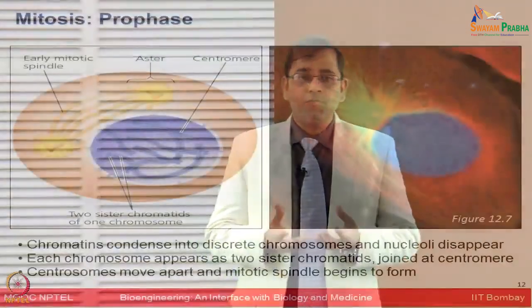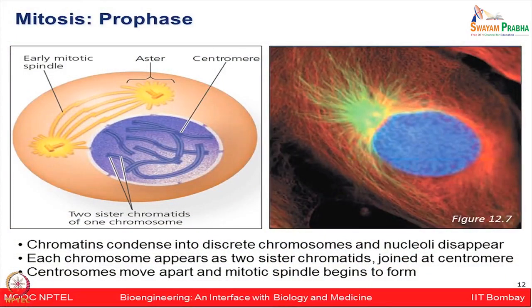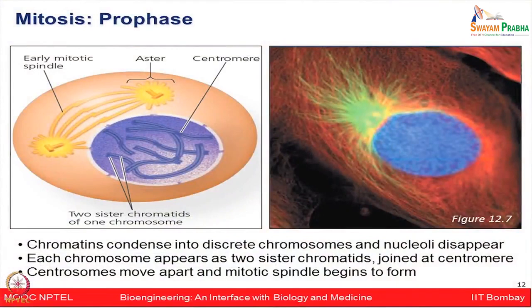In prophase, the nuclear content gets condensed forming chromatins. The sister chromatins are being formed, and the condensed material forms discrete chromosomes while the nucleoli disappear from the cell. Each chromosome appears as two sister chromatids joined at the centromere. At the same time, centrosomes move apart and the mitotic spindle starts to form, as seen in electron microscopy images.